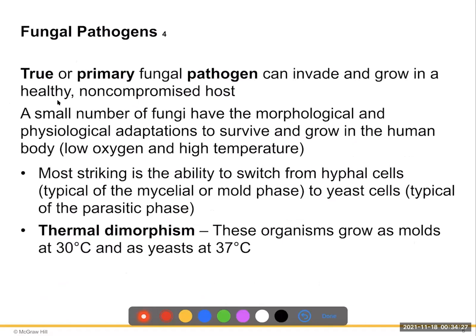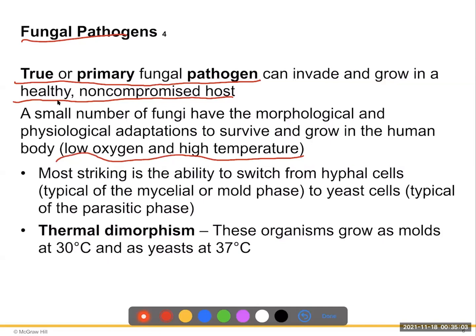True or primary fungal pathogens can invade and grow in a healthy, non-compromised host. A small number of fungi have the morphological and physiological adaptations to survive and grow in the human body, where they experience low oxygen and high temperatures compared to their environment. They have adapted to survive and grow under low oxygen and high temperature conditions.